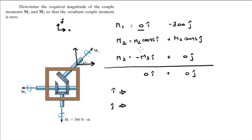If you add 0 plus M2 cosine of 45 minus M3 equals 0, it looks something like this: M2 cosine of 45 minus M3 is equal to 0.